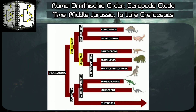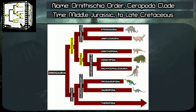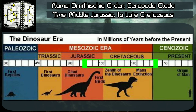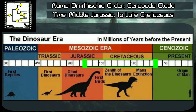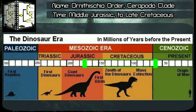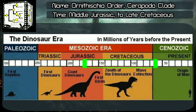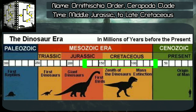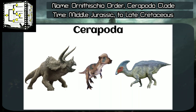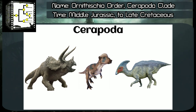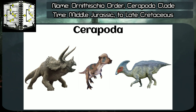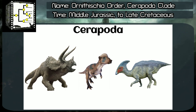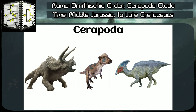Number 2: Ornithischia order. Cerapoda clade, classified by Paul Callistus Sereno, year 1986. Time range: Phanerozoic Aeon, Mesozoic Era, middle Jurassic to late Cretaceous periods, something around 165 to 66 million years ago. From Greek, Cerapoda means horned feet. Unfortunately, none of its members have horned feet. The Cerapoda clade includes the Ornithopoda and the Marginocephalia clades.